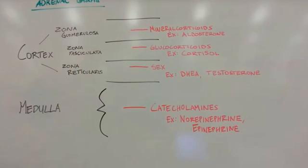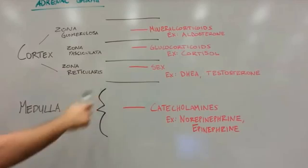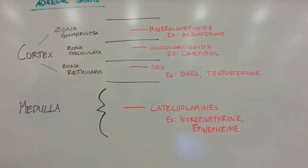Next, you've got the zona reticularis. That's going to make the sex hormones. Two examples of that are DHEA and testosterone.